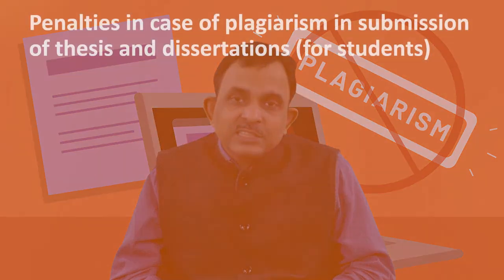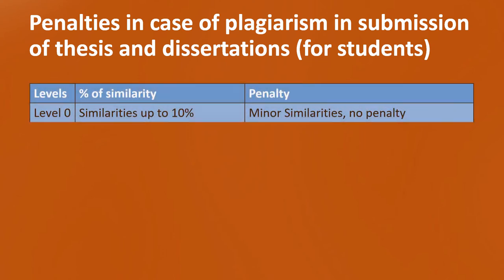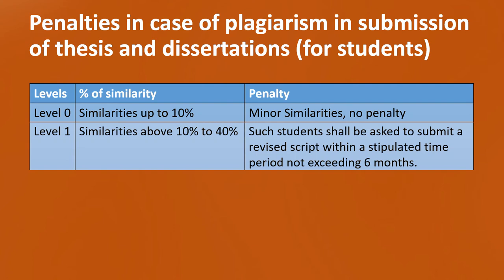What are the penalties? Because plagiarism can be done at the level of the student or at the level of the faculty, there are certain penalties suggested in UGC regulations. At the student level: if the similarity is up to 10%, it may be considered minor similarity and no penalty is imposed. If the similarity is above 10% and up to 40% — Level 1 — the student will be asked to submit a revised script after a stipulated time period, up to 6 months. So the work is returned to the student, the student will revise and rework on it, and submit the revised script within 6 months.